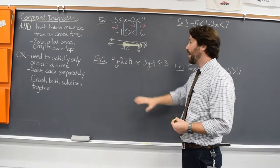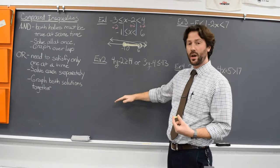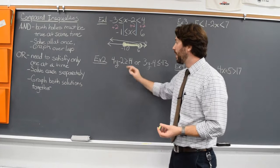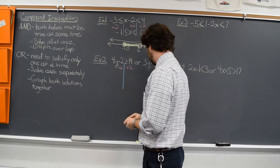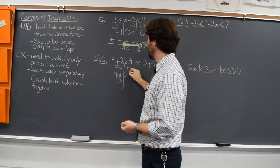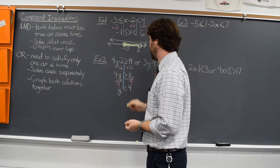Now number two, we have an or inequality. With an or inequality, they don't need to be satisfied at the same time. So we're not going to worry about an overlap — we're just going to solve one, solve the other, and put both solutions on the same graph. So I have four y minus two is greater than or equal to 14. Vertical line, add two to both sides: four y is greater than or equal to 16. Divide both sides by four, and we have y is greater than or equal to four.